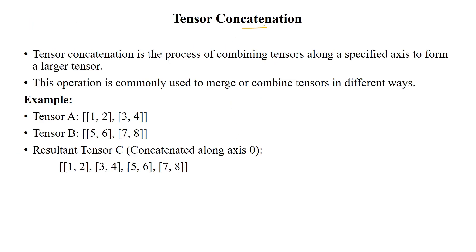Another operation is tensor concatenation, which is the process of combining more than two tensors. We use an axis to perform the concatenation operation, forming a large tensor. This operation is commonly used to merge or combine tensors in different dimensions. For example, having two tensors with 2 by 2 dimension and concatenating along axis 0 gives a resulting tensor with 4 by 2 dimension. This is tensor concatenation. Thanks for watching.